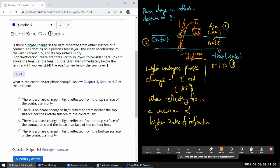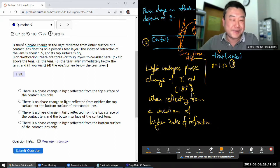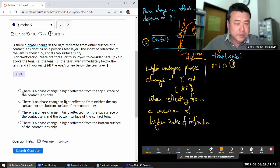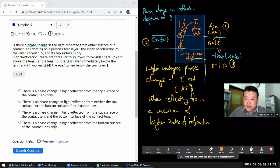I don't know if in the hint, yeah, what is the condition for phase change. You know, look at the section and it'll tell you. I do want you to memorize it, but it's fine. Okay, so I'm just going to go through each of the choices. There's a phase change in light reflected from the top surface of the contact lens only. Huh, that sounds right. That is what I'm seeing.